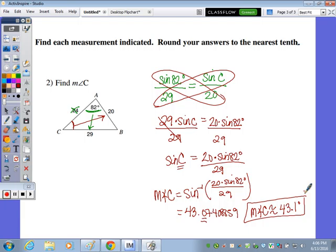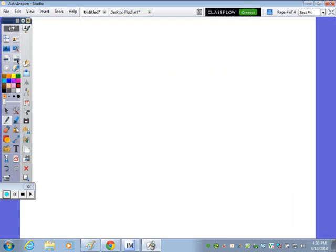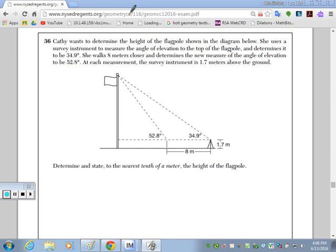Okay, now we're going to take a look at question 36, and using the law of sines. Okay, so Kathy wants to determine the height of the flagpole, shown in the diagram below. She uses a survey instrument to measure the angle of elevation to the top of the flagpole, and determines it to be 34.9 degrees. She walks 8 meters closer, and determines the new measure of the angle of elevation to be 52.8 degrees. At each measurement, the survey instrument is 1.7 meters above the ground.